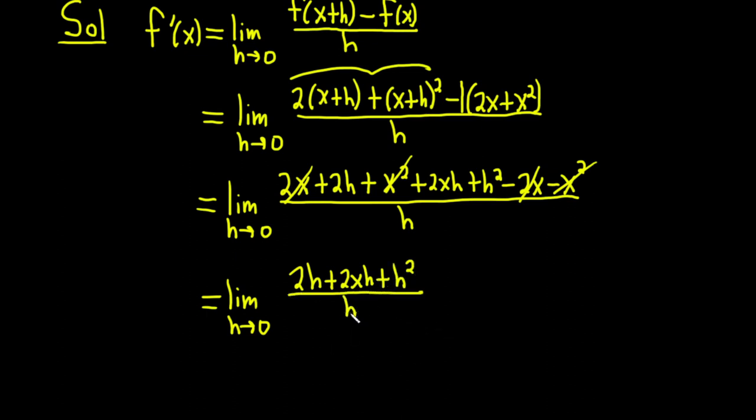And we still can't plug in h equals 0 because we're still getting division by 0. So now what we can do is we can factor out an h from the numerator.